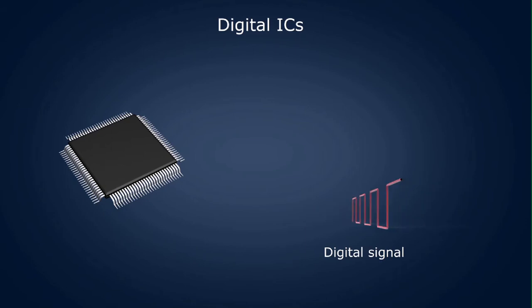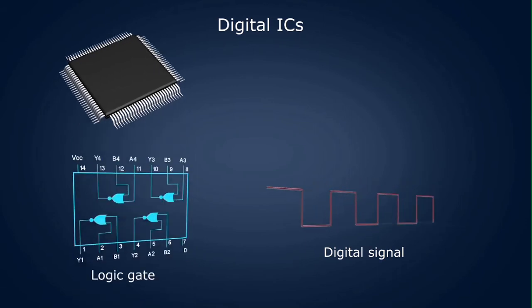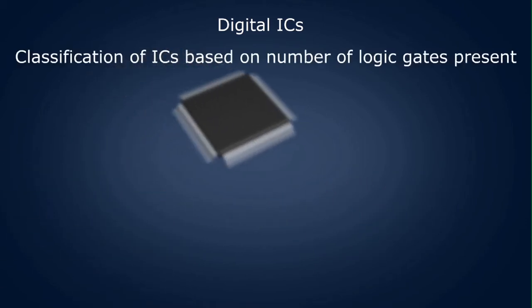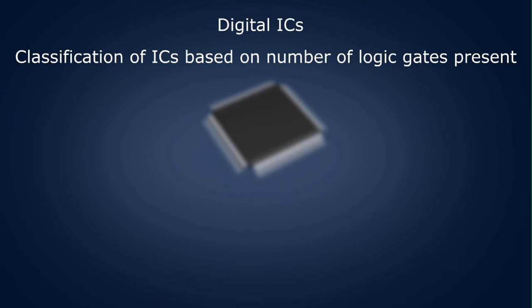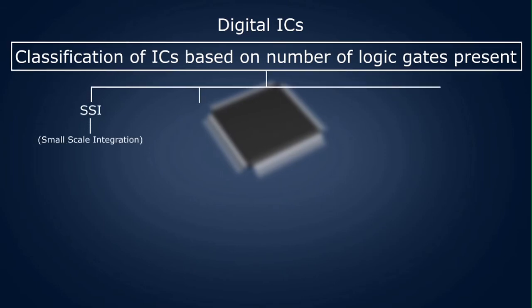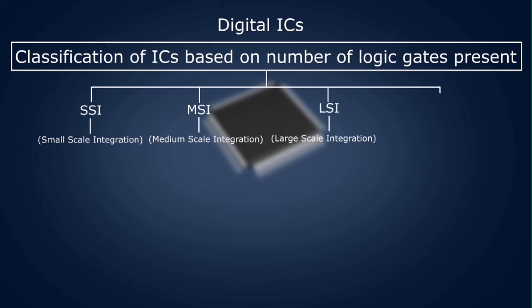In digital ICs, the input signals are digital signals that have only two values. They contain circuits such as logic gates. Based on the number of logic gates present, digital ICs can be further classified as SSI, MSI, LSI, and VLSI.